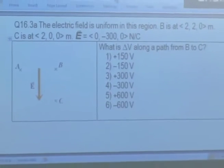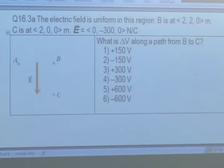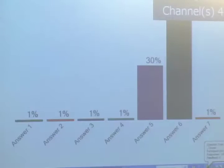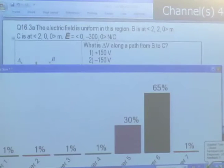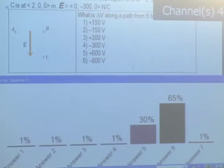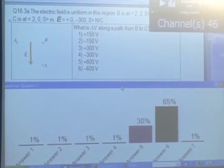The best way to get used to this is to try some examples. Here is a region of electric field pointing downward. We have three points A, B, and C; we're just going to look at B and C for right now. B is at location (2, 2, 0) meters, C is at location (2, 0, 0) meters. Electric field is (0, −300, 0) newtons per coulomb. Using this relationship between electric field and the change in potential, what is delta V along a path that goes from B to C? About 65% say positive something and 30% say negative something — signs are going to be really important here.